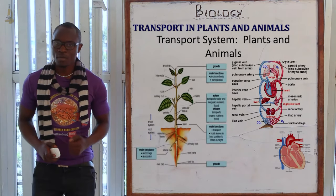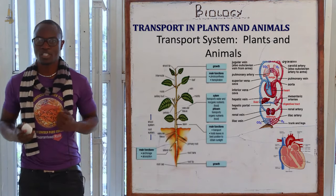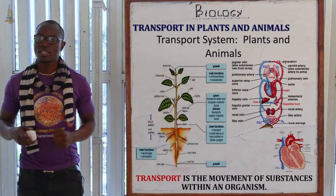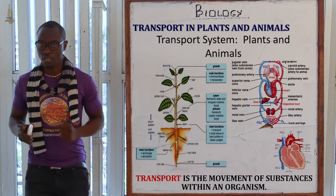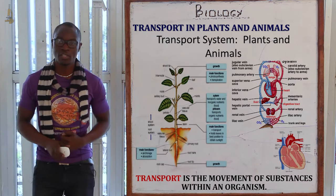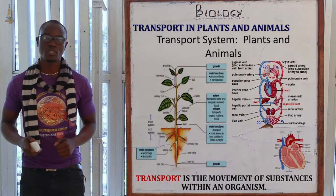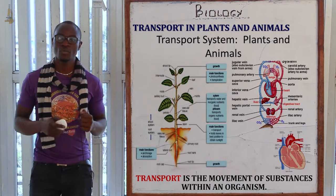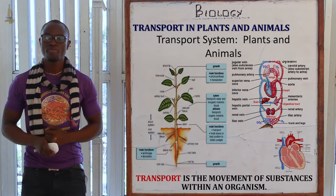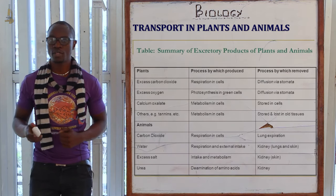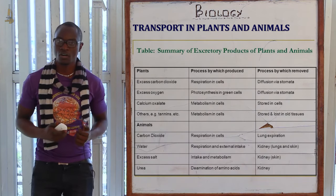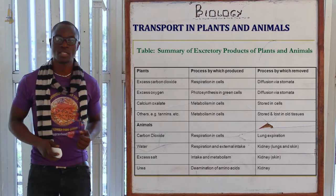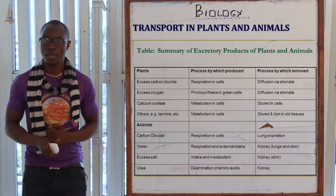Welcome to this class where today we discuss transport in plants and animals. Transport in biology is different from transport in geography. In biology, transport is the movement of substances within an organism. Excretory products need to be transported to sites where they will be removed from the body, because retention of these excretory products will poison the cells and the whole organism might perish.